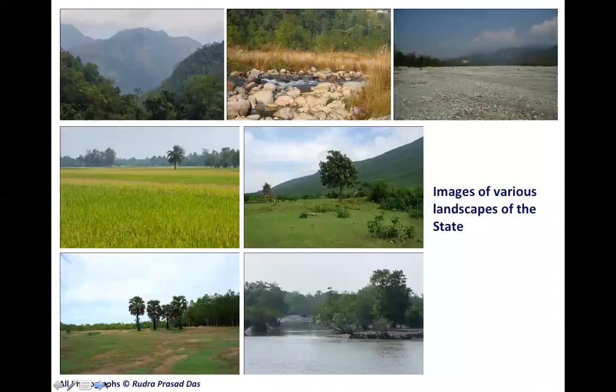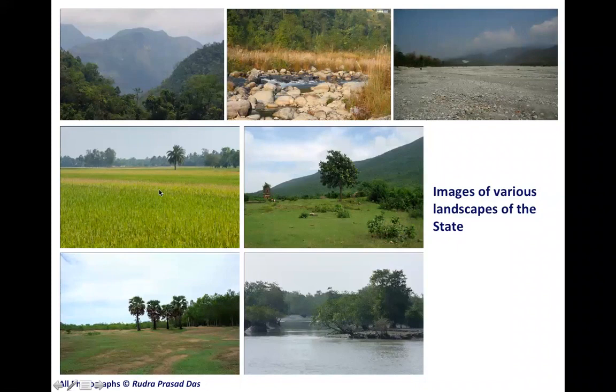Here are a few images of diverse habitats. This is from the Himalayan region; this is a jhora or small rivulet; this is the famous riverbed side of Jhalong; this is agricultural land; these two images are from dry zones with red lateritic soil; and this is mangrove. This diverse climate supports and favors a diversity of ecological habitats, evident from the floral and faunal diversity of the state.